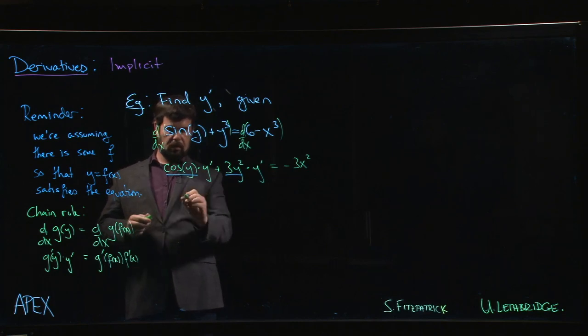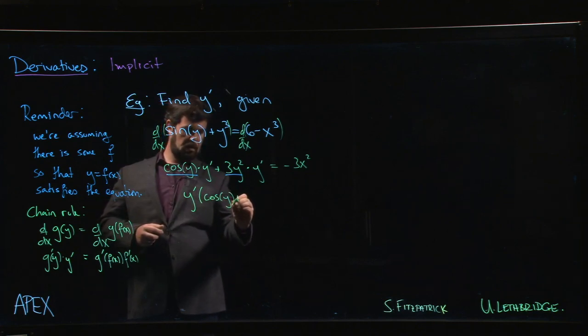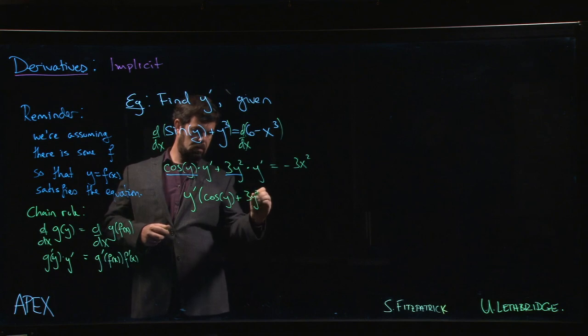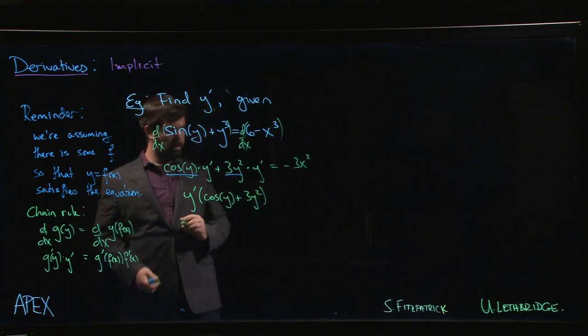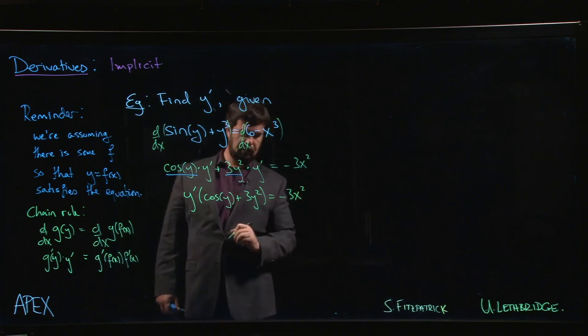So we take out the common factor of y prime. That leaves us with cos y plus 3y squared equal to minus 3x squared.